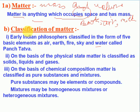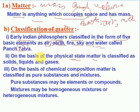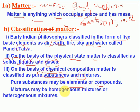Now we will do the classification of matter. Early Indian philosophers classified matter in the form of five basic elements — air, fire, sky, water — called Panch Tatva. On the basis of physical state, matter is classified as solid, liquid, and gas. On the basis of chemical composition, matter is classified as pure substance and mixture. Pure substance can be element or compound; mixture may be homogeneous or heterogeneous. In this chapter we will learn about physical states of matter.